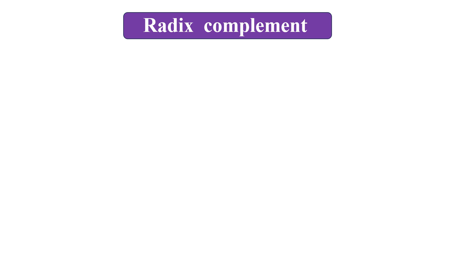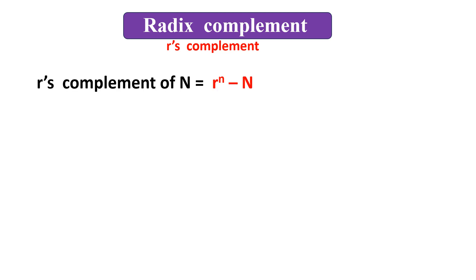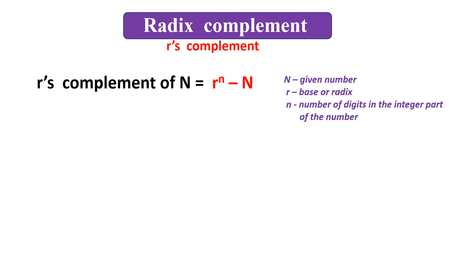Radix complement is also called R's complement. To find the R's complement of a number N, the formula is r to the power of n, minus N. Here, N is the given number, r is the base or radix, and n is the number of digits in the integer part of the number.